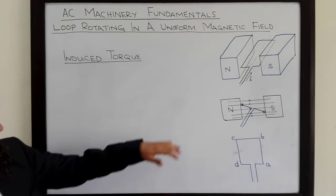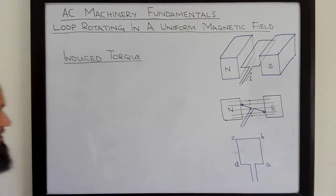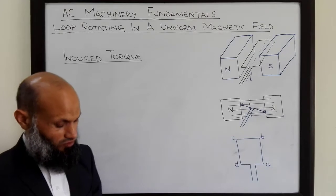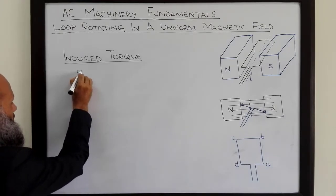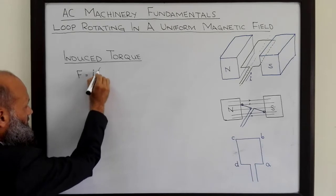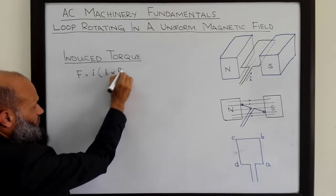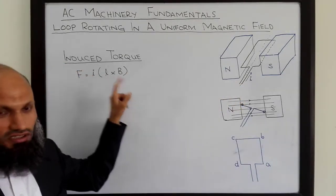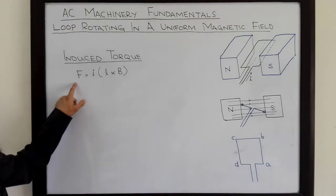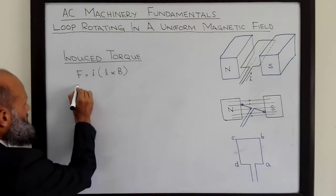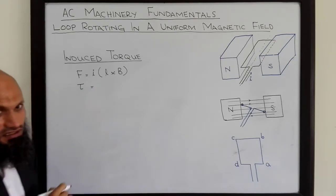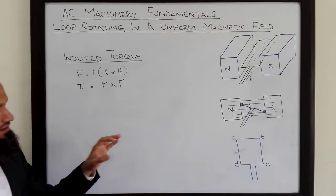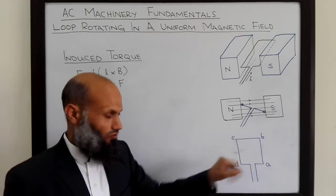We want to derive an expression for torque induced in this coil. We know that a current-carrying conductor placed in a magnetic field experiences a force. And that force is given by F = IL × B, where I is the current in the conductor, L is the effective length, and B is the flux density. Due to that force, there will be induced torque, and that torque and force are related by τ = R × F. Let's analyze each segment of this coil separately.